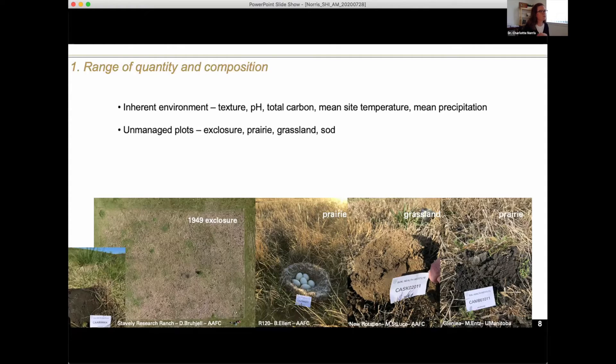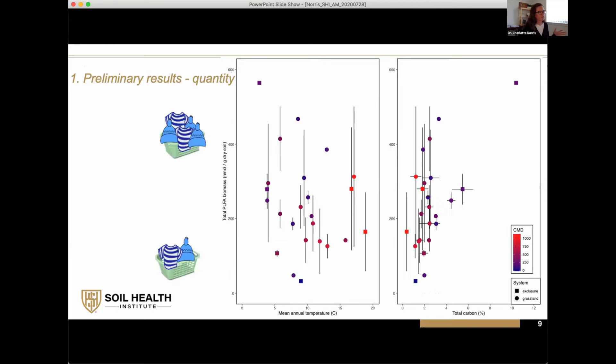Looking at that, we've already seen some of this data presented in other ways. We've got mean annual temperature on our x-axis and total PLFA biomass, increasing biomarkers or laundry load, along the y-axis. The points are representative of these unmanaged plots. Generally speaking, we have a decreasing trend in biomass with increasing temperature, but it's messy data.